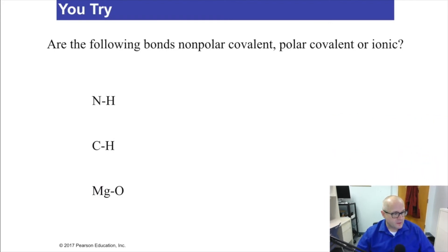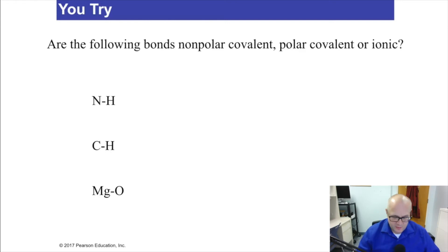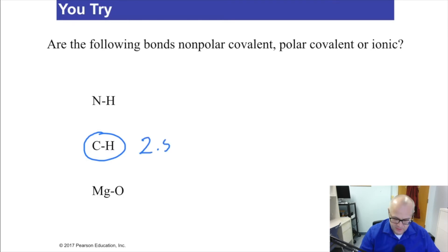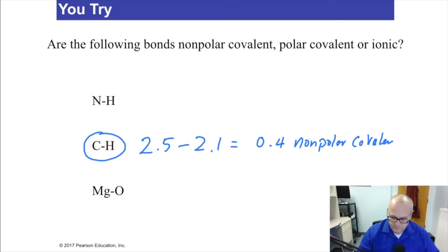Here's one for you to try — pause the video, grab your electronegativity table or look it up online. Welcome back. Carbon is 2.5, hydrogen is 2.1, difference of 0.4 — nonpolar covalent. We've already done that one.